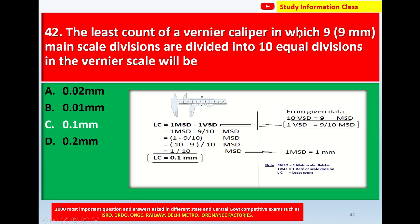For this question, from the given data: 9 mm MSD (main scale divisions) are divided into 10 equal divisions on the vernier scale, so 9 MSD = 10 VSD. We need to find the least count of the vernier caliper. Least count = 1 MSD − 1 VSD. First, find 1 VSD: since 10 VSD = 9 MSD, we get 1 VSD = 9/10 MSD.